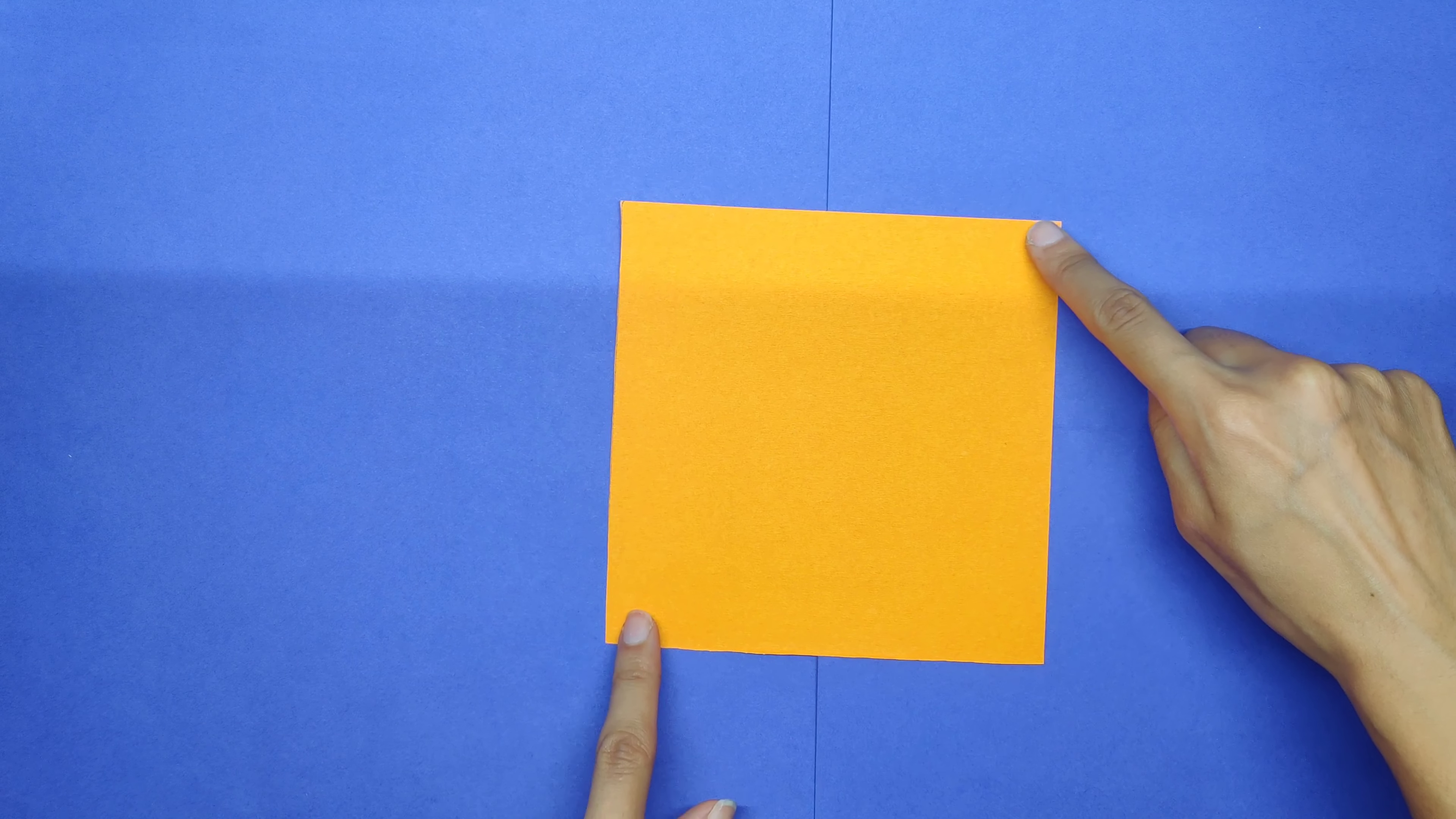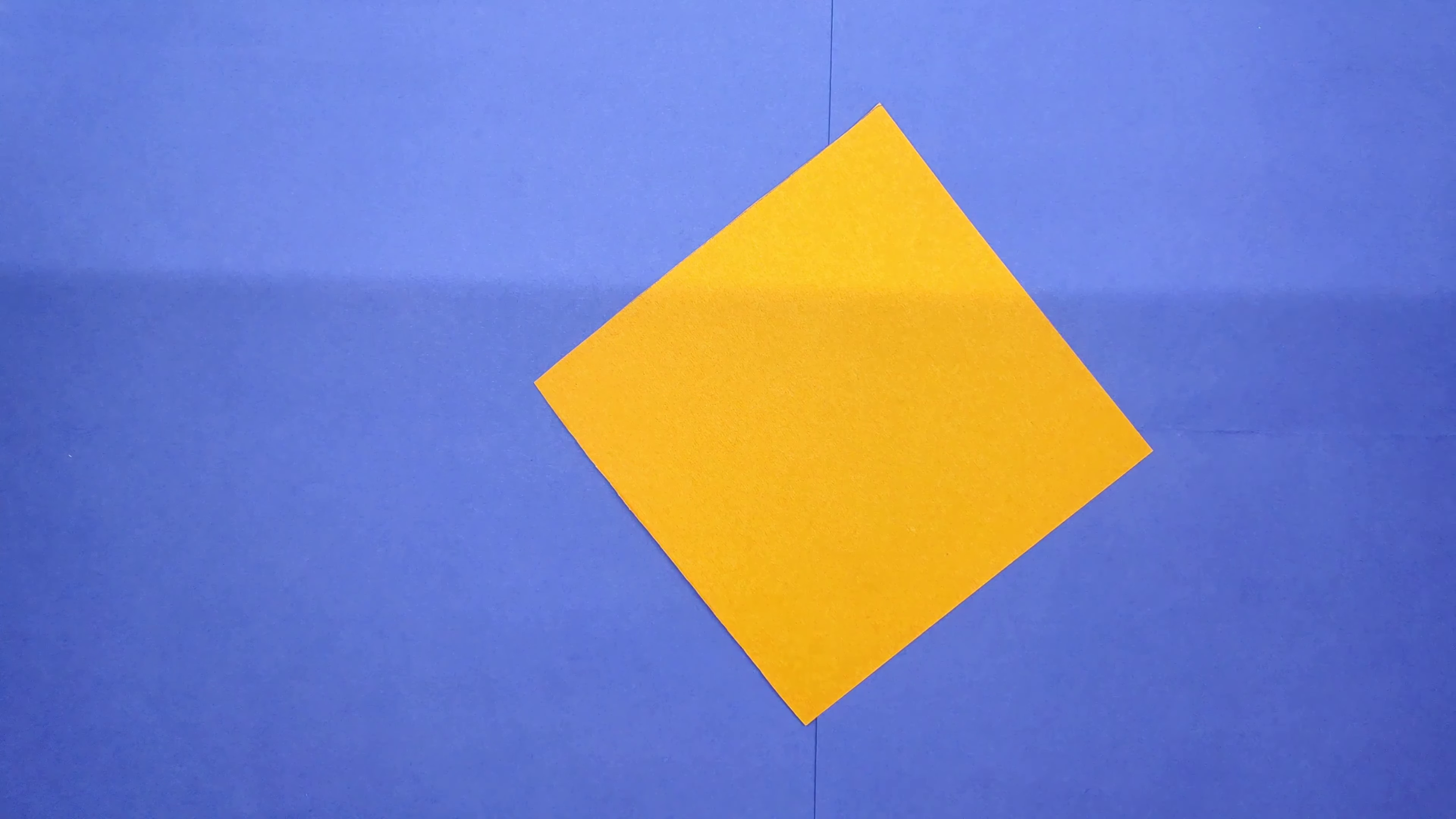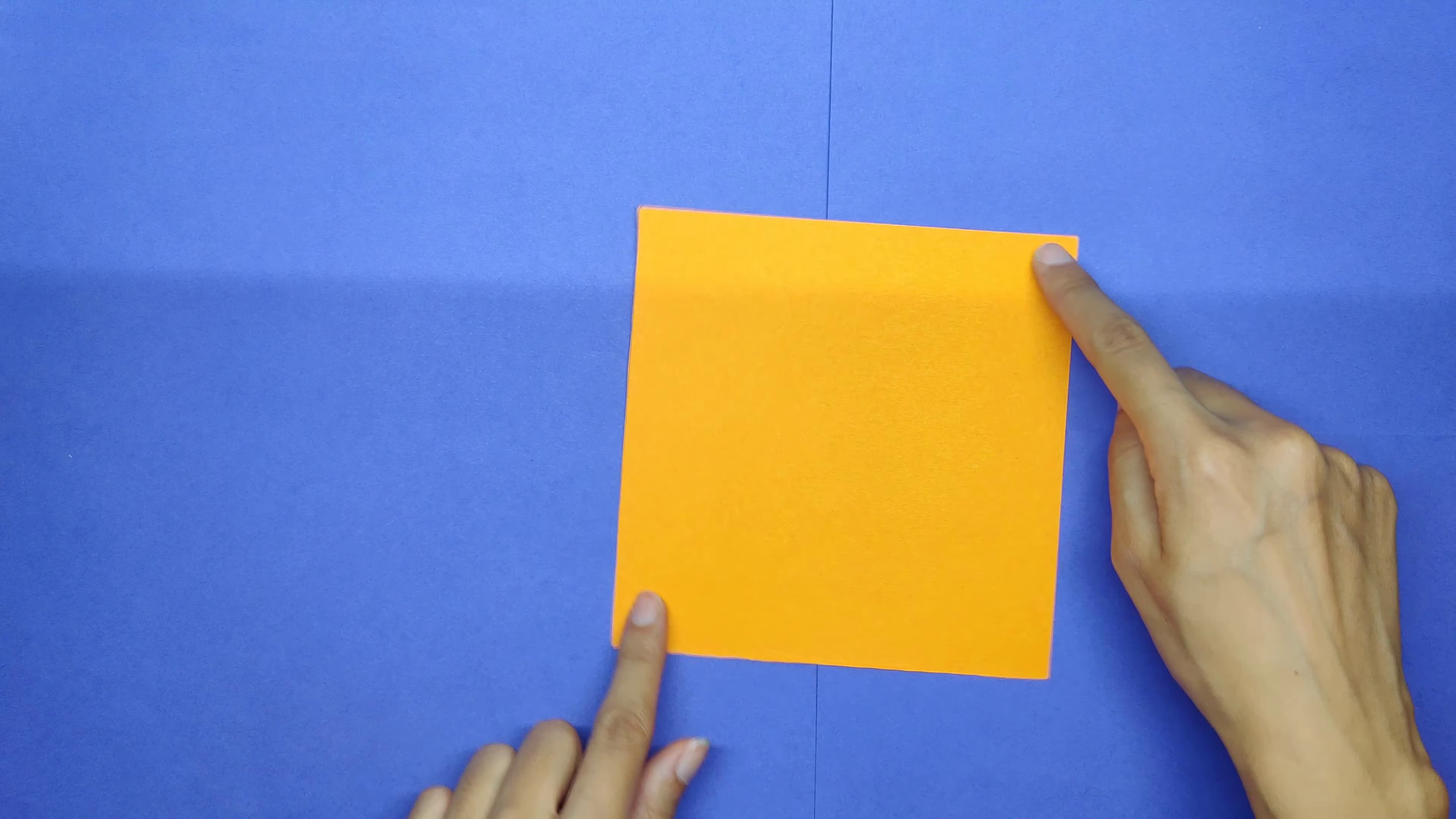All you need to do is to do-do-do-do-do-do-do. Ta-da! From a square to a diamond.